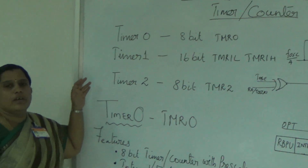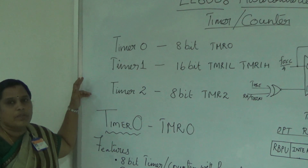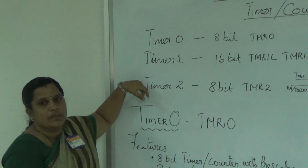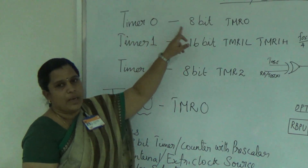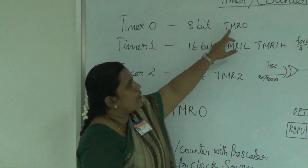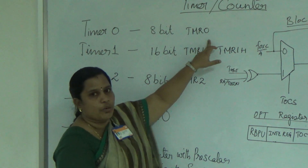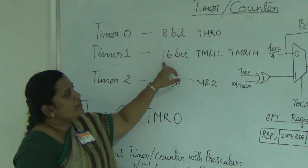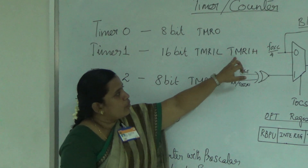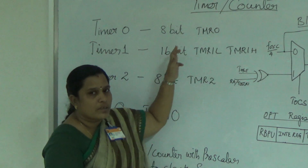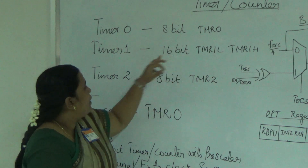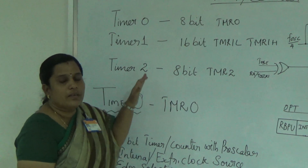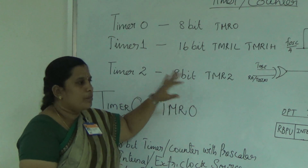When we go for the timer and counter, we have three timers in our PIC microcontroller: Timer 0, Timer 1, and Timer 2. Timer 0 is an 8-bit timer with a pre-scaler. Timer 1 is a 16-bit timer, consisting of Timer 1 Low and Timer 1 High, also with a pre-scaler. Timer 2 is an 8-bit timer that can be used with or without a pre-scaler.